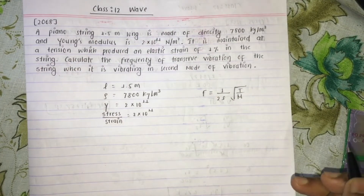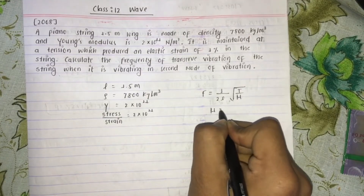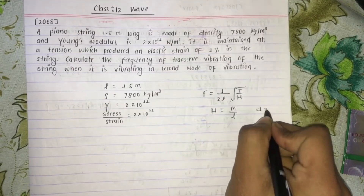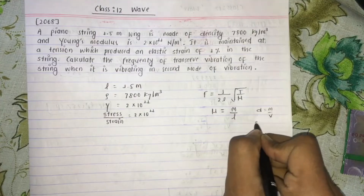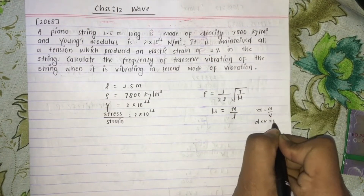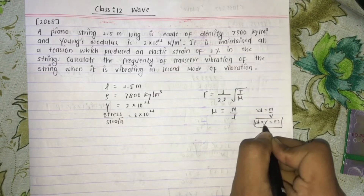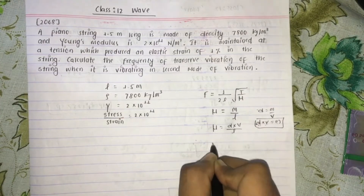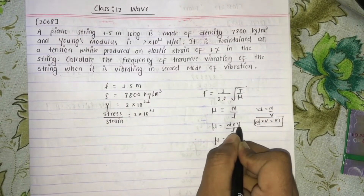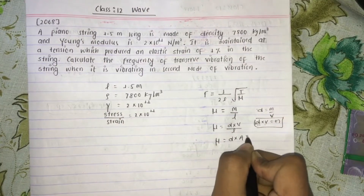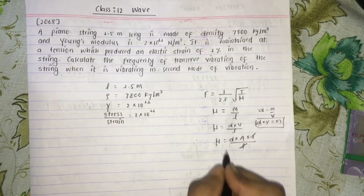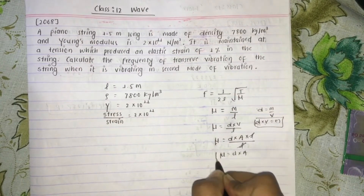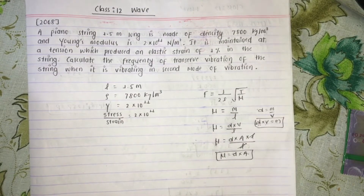Here mu is the mass per unit length. Density is equal to mass by volume, so mass equals density into volume. Therefore mu equals density into volume divided by length, which simplifies to density into area — mu equals rho times A.